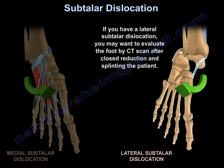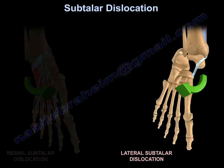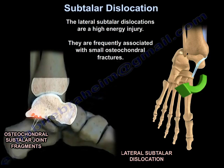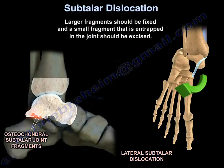If you have a lateral subtalar dislocation, you may want to evaluate the foot by CT scan after closed reduction and splinting. The reason for getting a CT scan is to see if you have any bony fragments that may need to be removed or fixed — this can also be done for medial subtalar dislocation if necessary. These bony fragments can cause the subtalar joint to be unstable. Lateral subtalar dislocations are high-energy injuries, frequently associated with small osteochondral fractures.